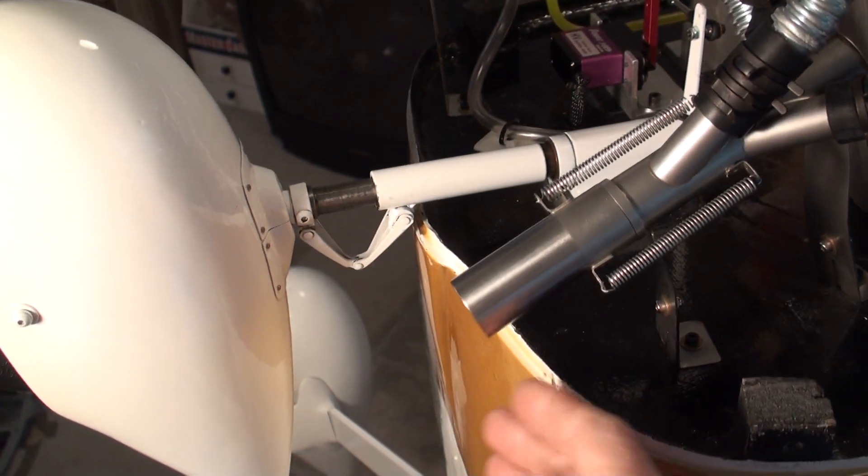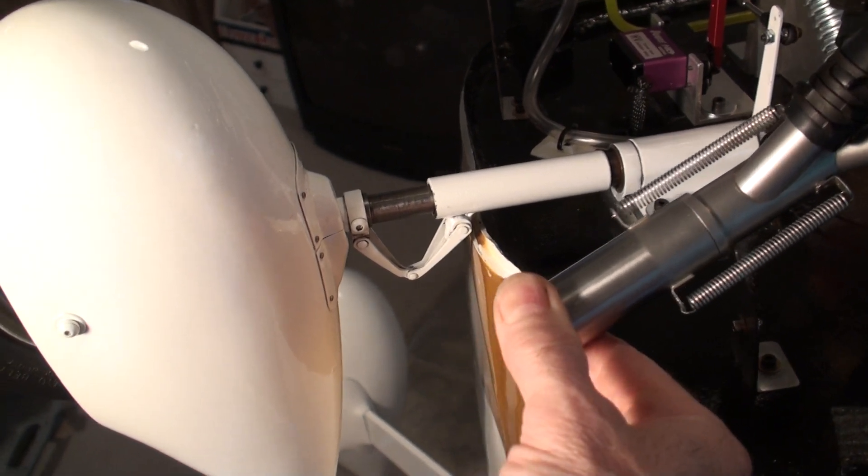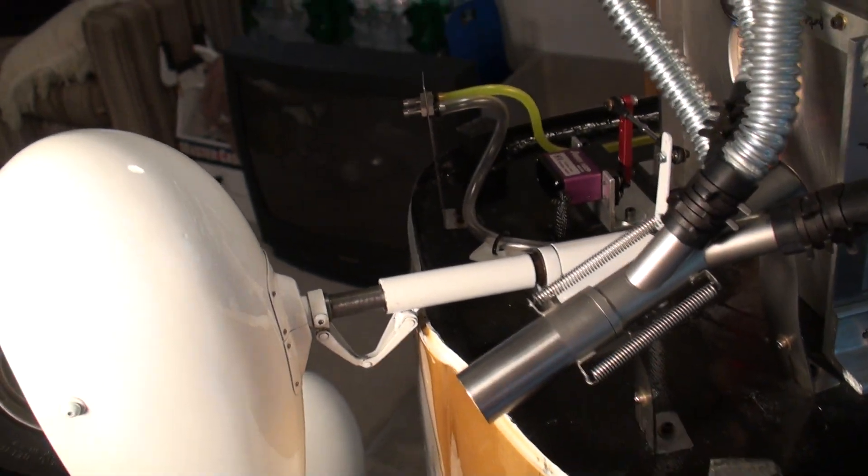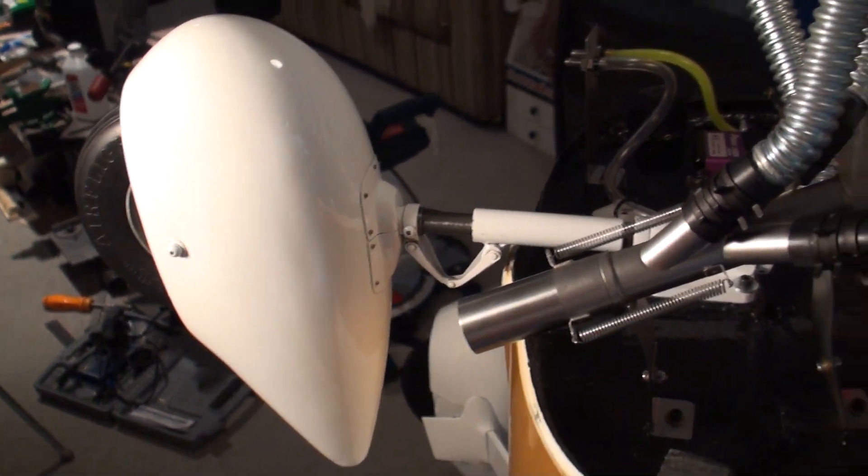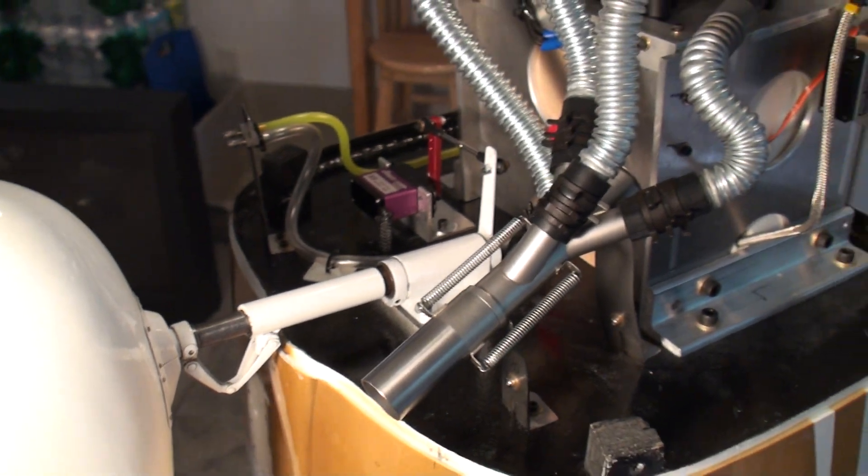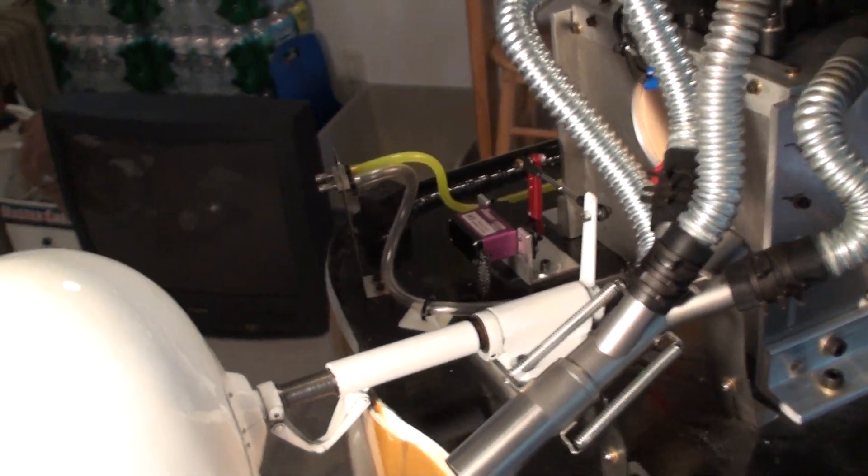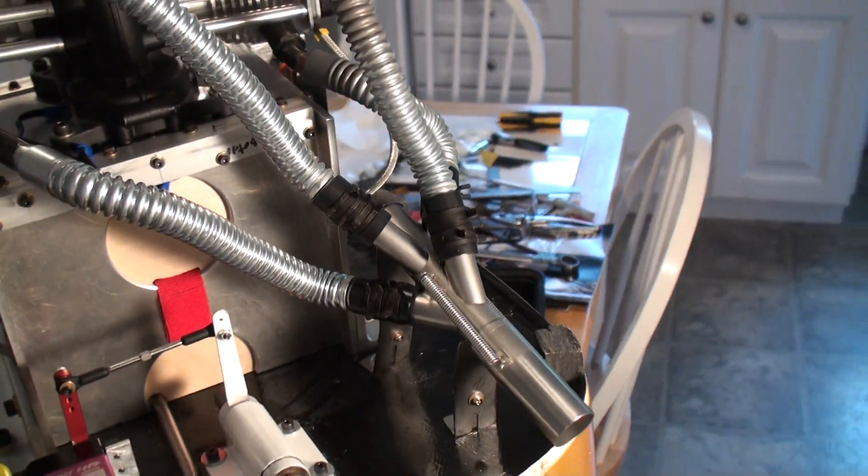The tailpipe is a separate piece, it's held on with these two springs that I can put on after the cowl is on, because otherwise the cowl wouldn't fit past the tailpipe. It's the only way I could make it long enough and still have the cowl be able to get on there.